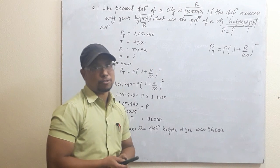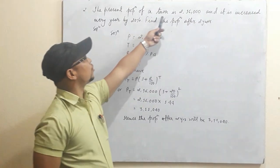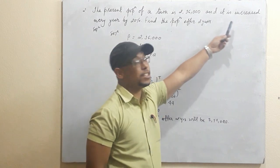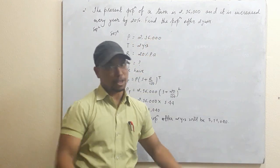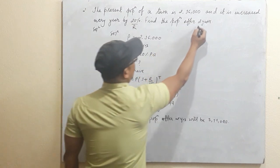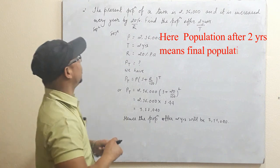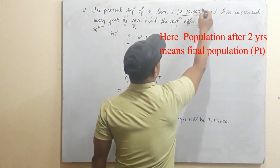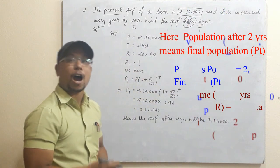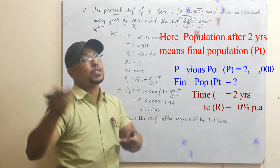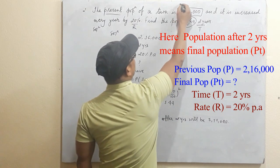The population before two years was ninety-six thousand. Now let's do question number two. The present population of a town is two lakhs sixteen thousand and it increases every year by twenty percent. Find the population after two years. Here R and T are obvious. We need to identify P and PT. The present population is given, and we are asked to find the population after two years — after two years means it is in the future.